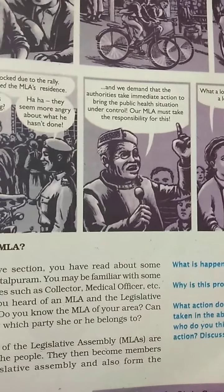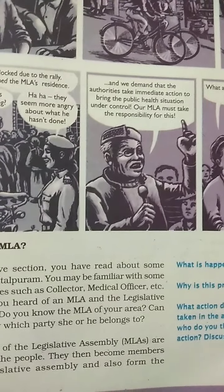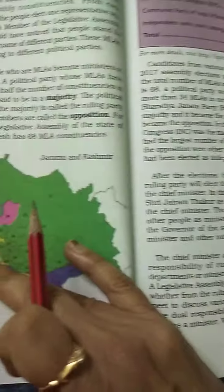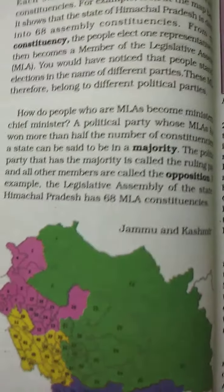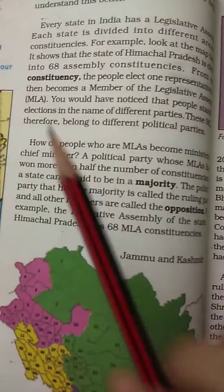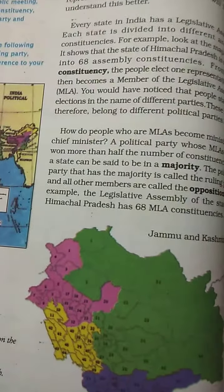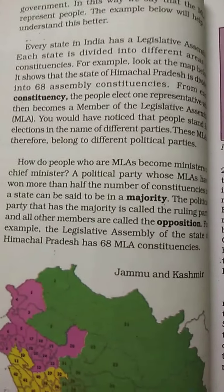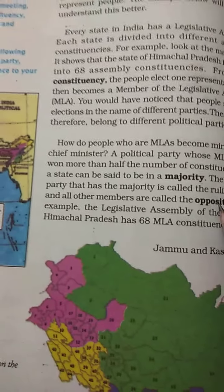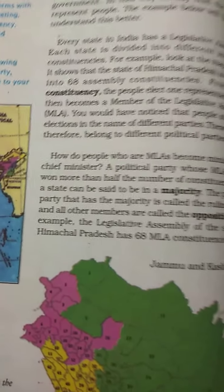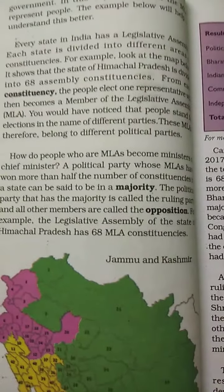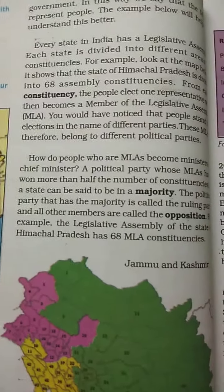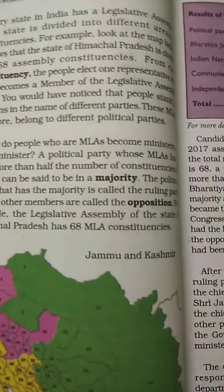The MLAs enter the assembly and form the government. Every MLA is elected from one area, and that area is known as their constituency. The political party whose MLAs win more than half of the total constituencies in the state gets the majority.